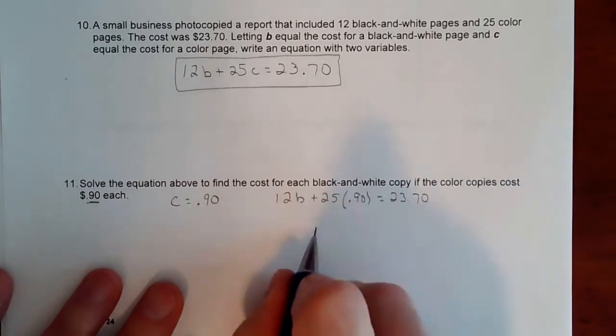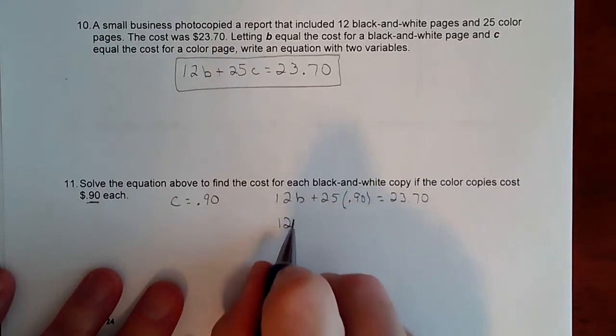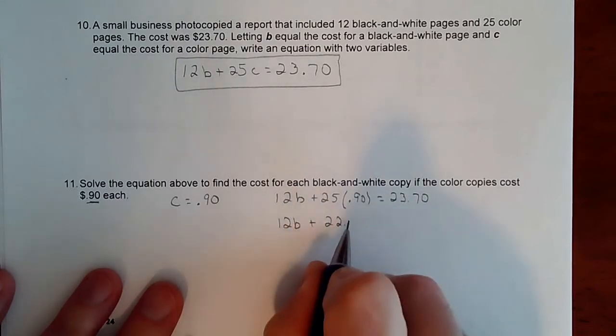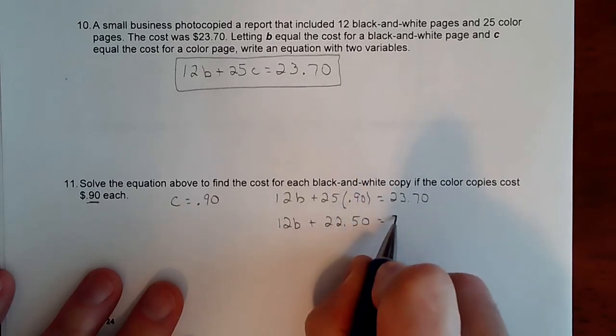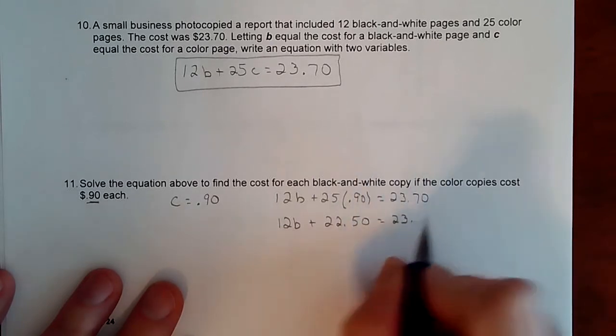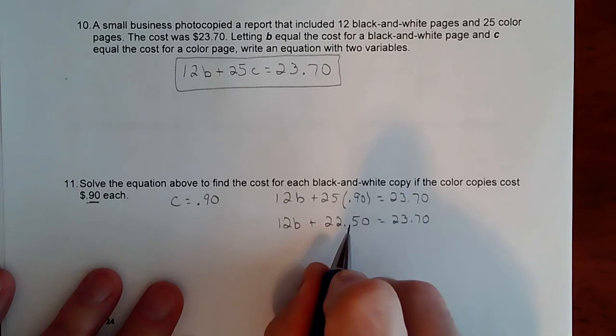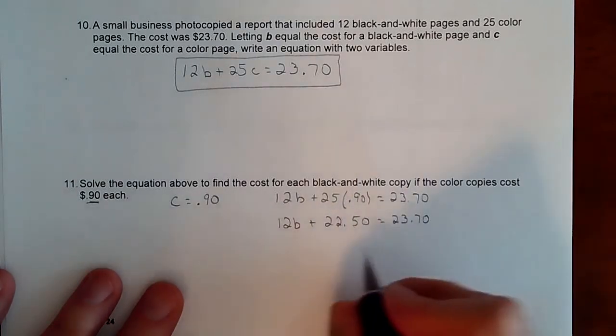So I have 12B plus 25 times C, which C is 90 cents each. And our total bill is 23.70. All right. So 25 times 0.9. If I throw that into a calculator, that gets me 22.50. Okay. So 22.50 out of the $23.70 is made up of our color copy cost.